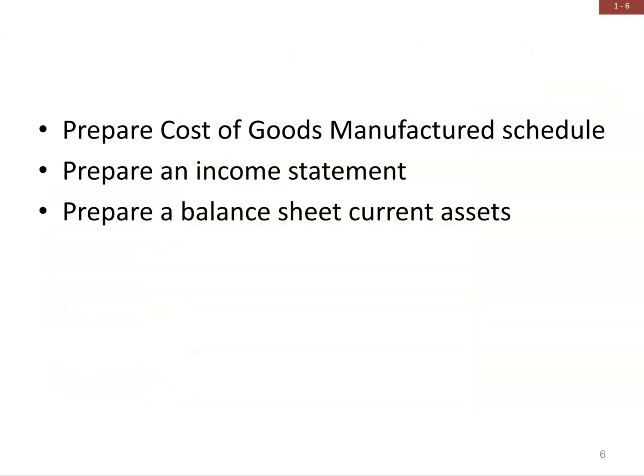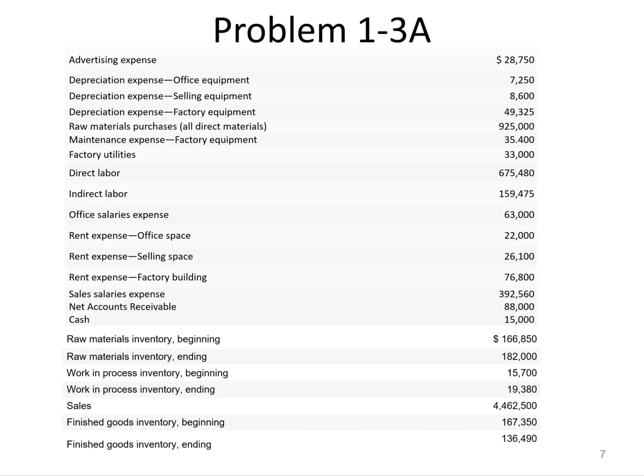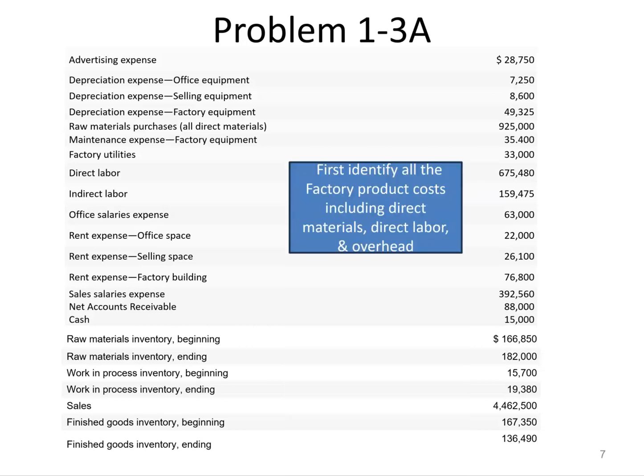Now let's take a look at preparing one of these. I've selected a problem we're going to use to prepare the schedule of cost of goods manufactured, an income statement, and a balance sheet. When I start a problem like this with a whole list of information, the first thing I like to do is identify costs so I know I won't use them again. I'm going to identify all the factory product costs: direct materials, direct labor, and overhead. In this problem, overhead is anything that says 'factory.'